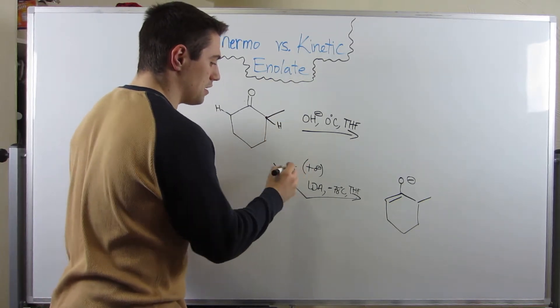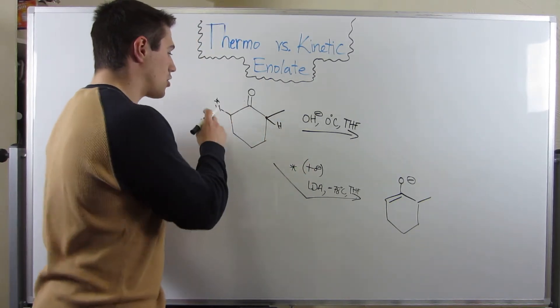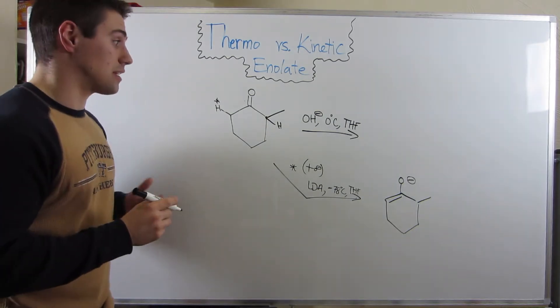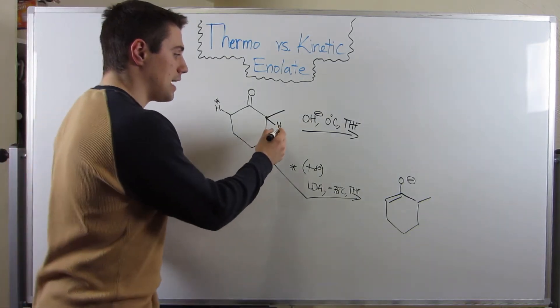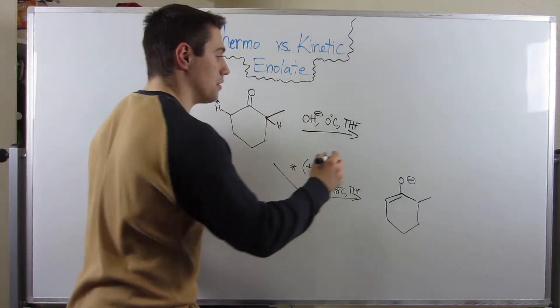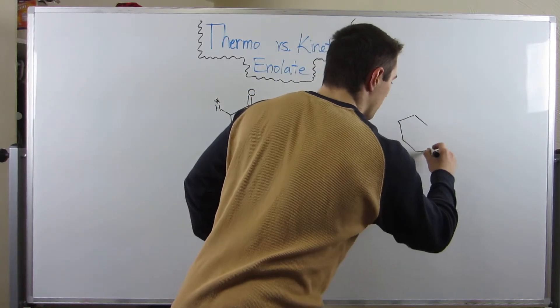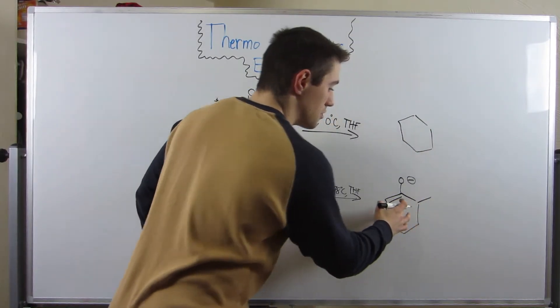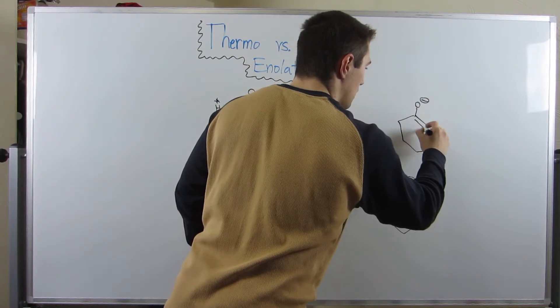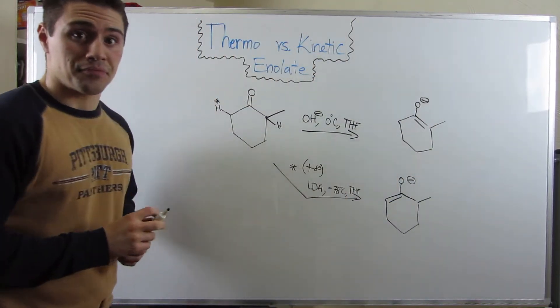So if I put an asterisk here to signify we take this hydrogen, then we take this hydrogen. And instead of the double bond going to the left, we're actually going to make our enolate to the right.